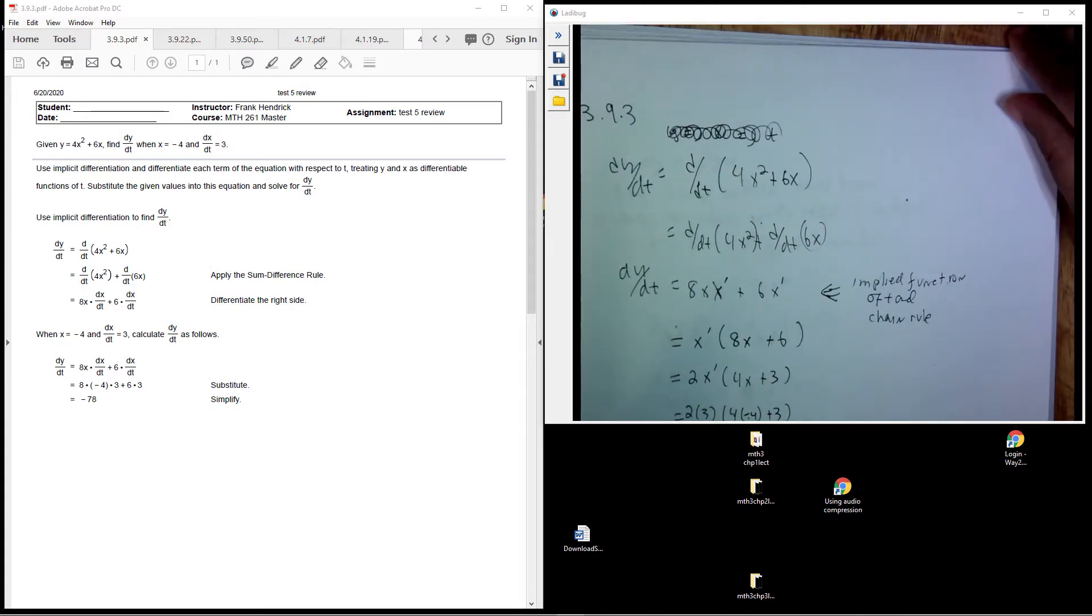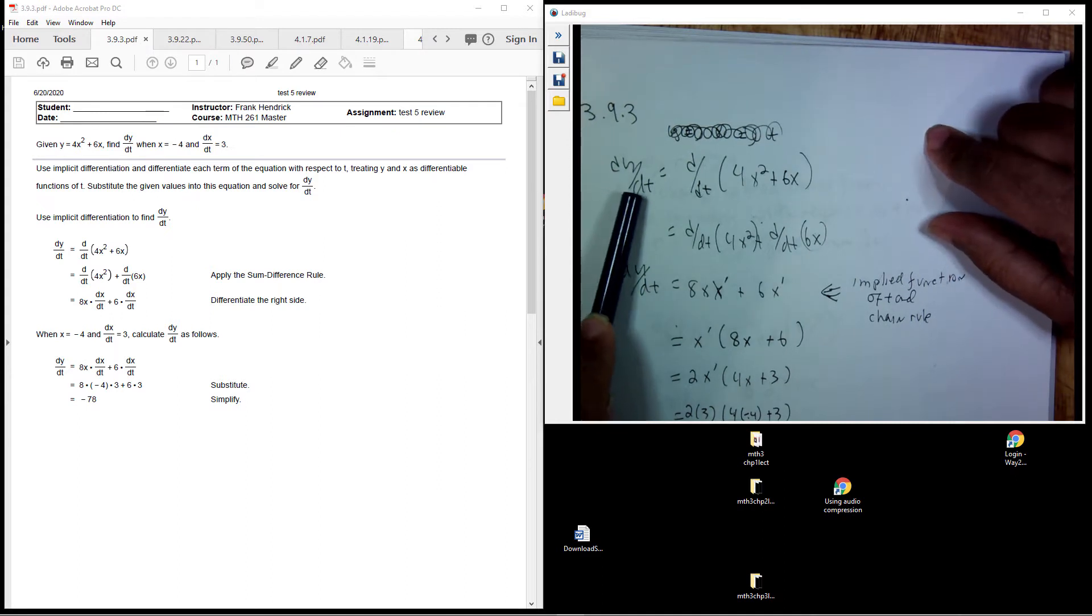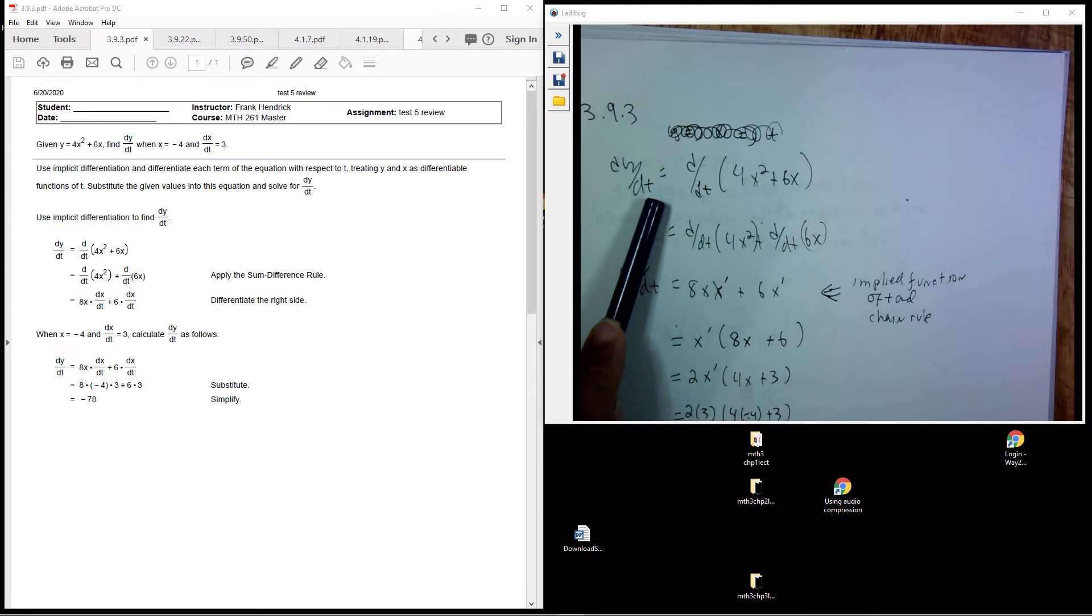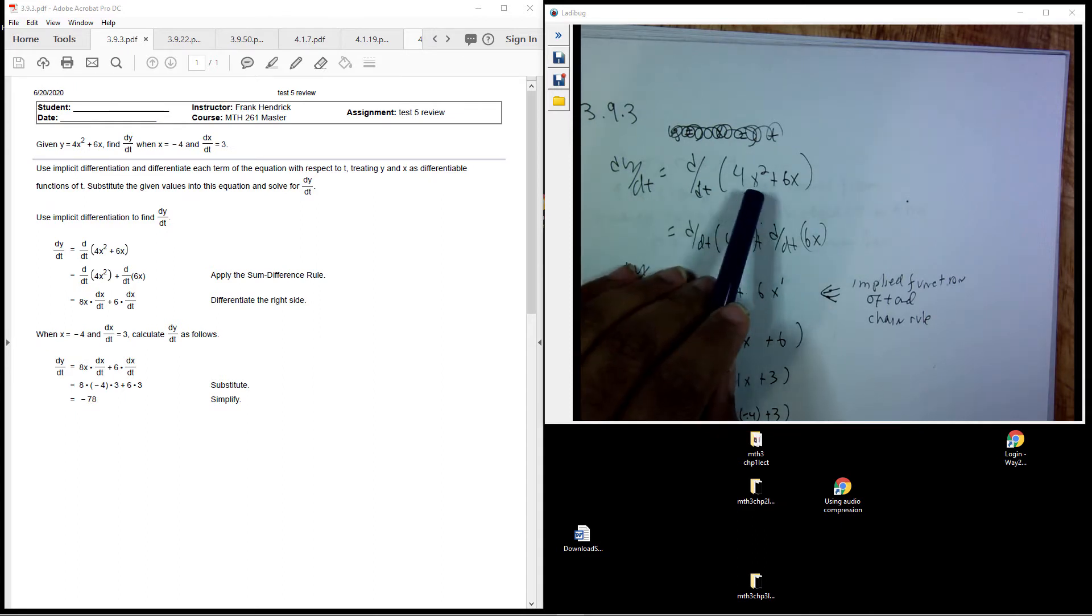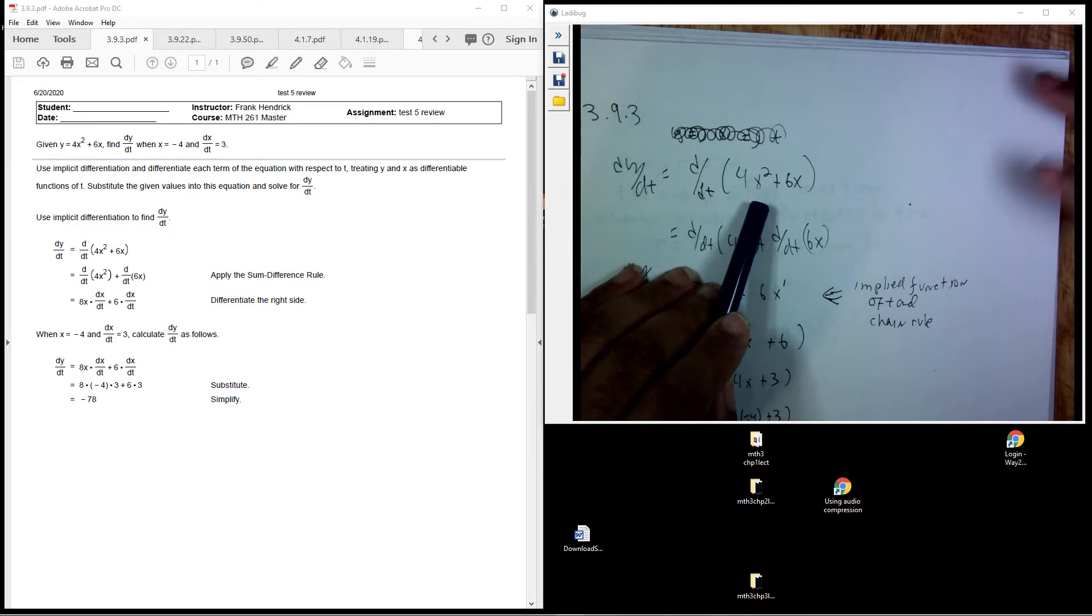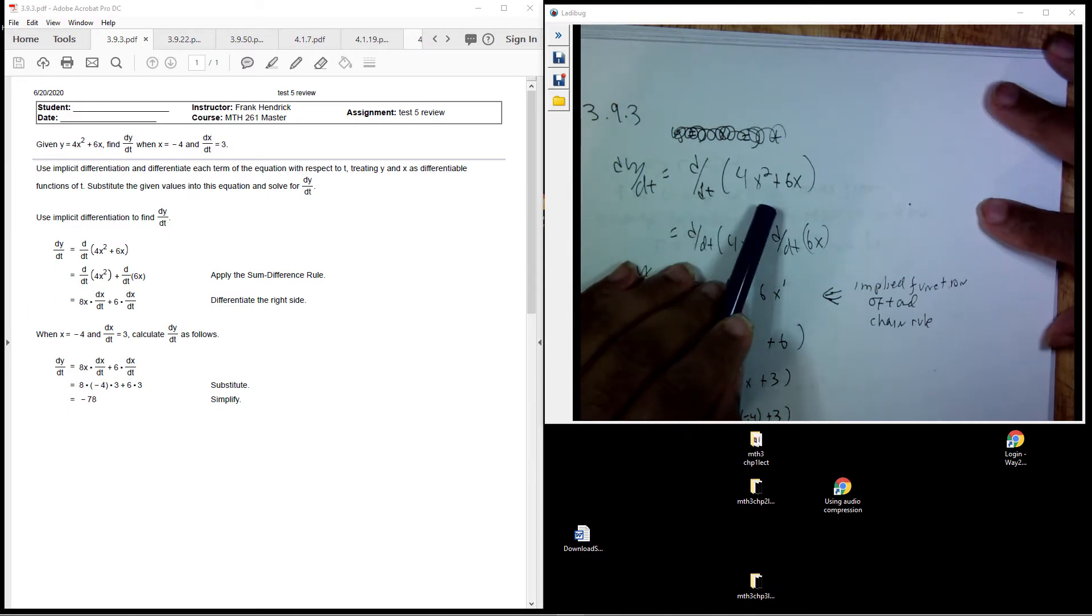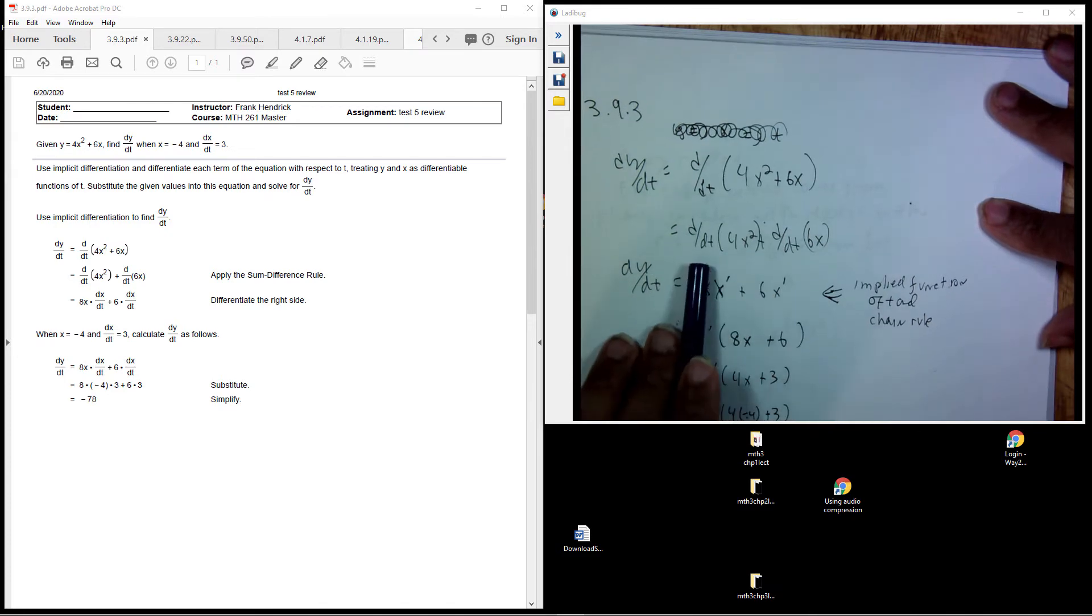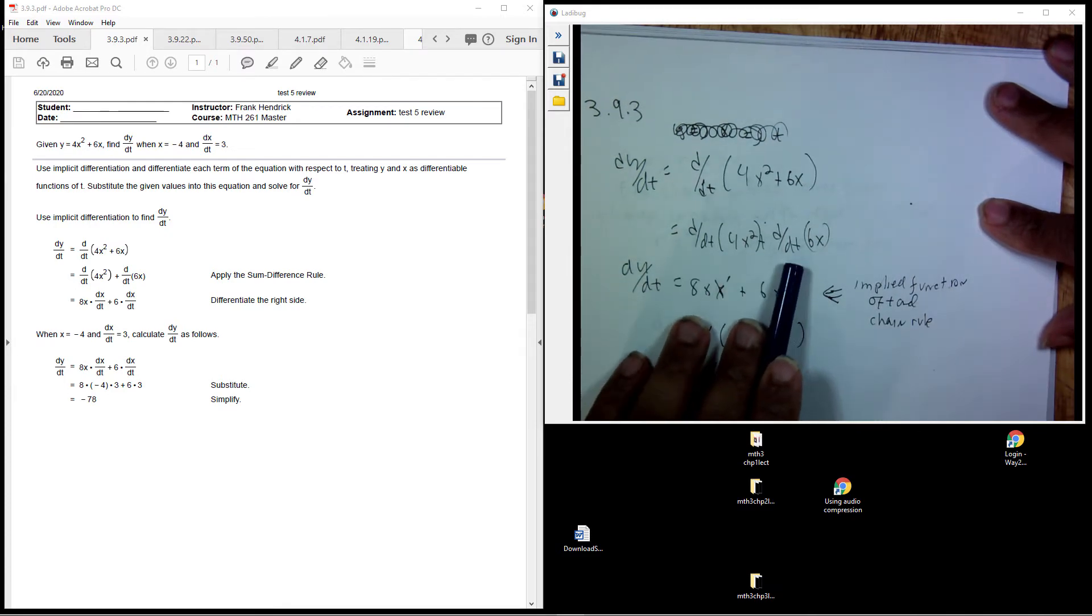So we end up taking the function dy/dt. We know that x is a function of t, but we don't know what the function is, just some function in x. It takes t for the input, so we take the derivative. Here we have a sum, so we break it up: d/dt of 4x squared plus d/dt of 6x.